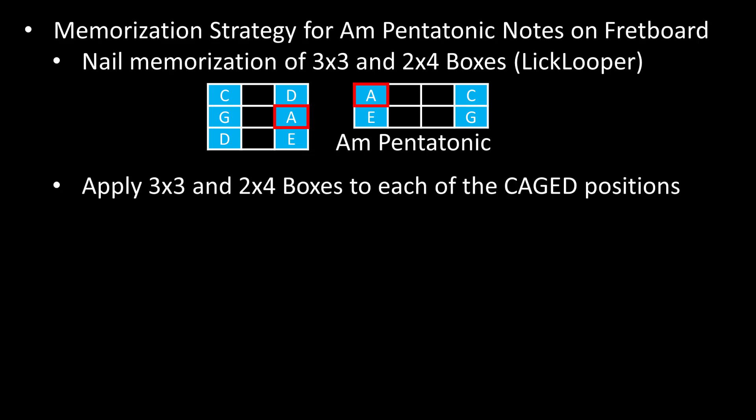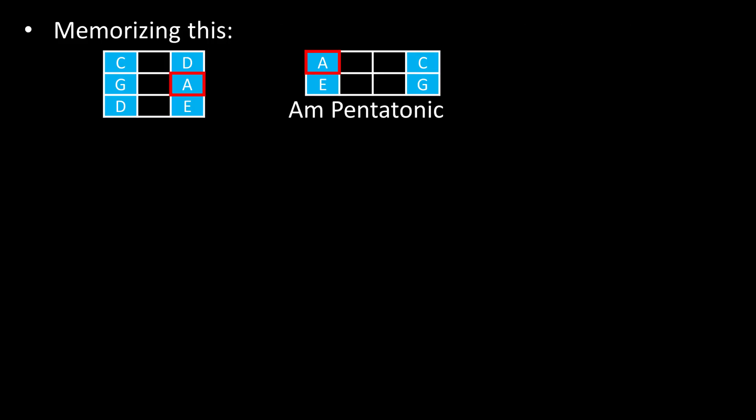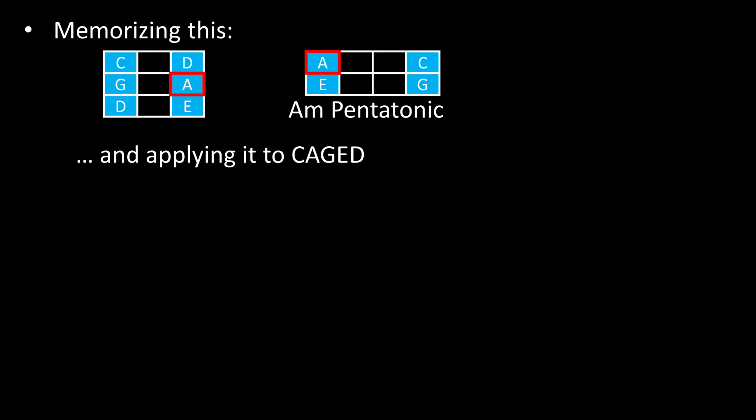Then, apply the 3x3 and 2x4 boxes to each of the caged positions, noting the B string shift and the neck wrap around at the E strings. Memorizing the boxes, absolutely, and then applying it to caged, is so much easier than trying to make sense of this.